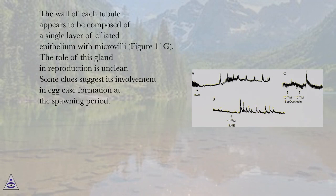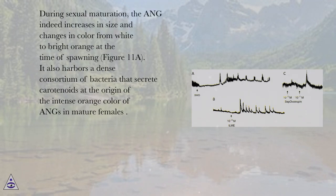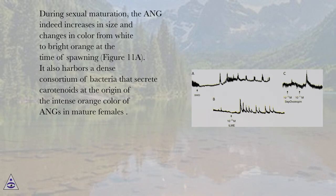The role of this gland in reproduction is unclear. Some clues suggest its involvement in egg case formation at the spawning period. During sexual maturation, the AG indeed increases in size and changes in color from white to bright orange at the time of spawning, figure 11a. It also harbors a dense consortium of bacteria that secrete carotenoids at the origin of the intense orange color of AGs in mature females.